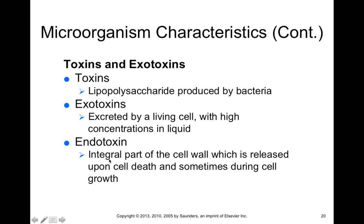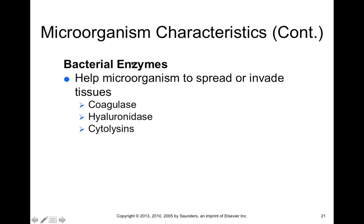Endotoxins are usually part of the cell wall of a microorganism and are released when those microorganisms die or while cells are growing. An example is the lipopolysaccharide on Clostridium difficile. If released in too high a concentration — such as if you kill off too much C. diff too rapidly — this can actually lead to shock. So C. diff infection must be cleared more slowly so that too much endotoxin isn't released simultaneously. Other bacterial enzymes secreted as exotoxins can help those bacteria spread or invade tissues, such as coagulase.